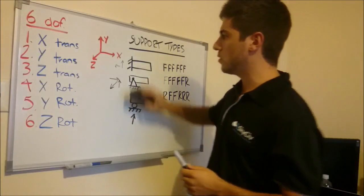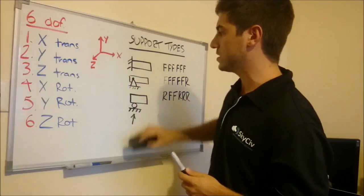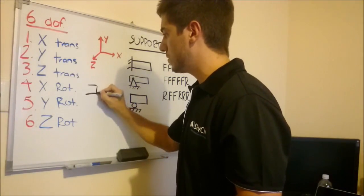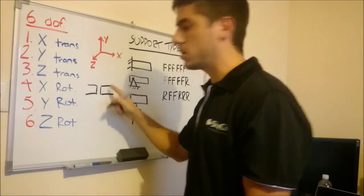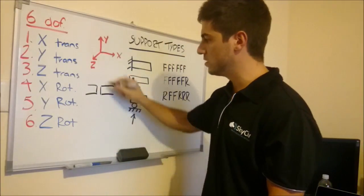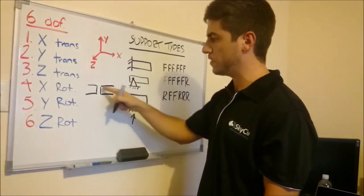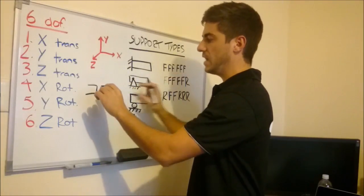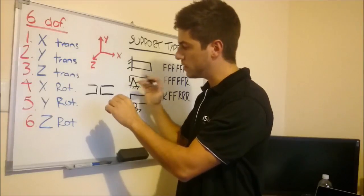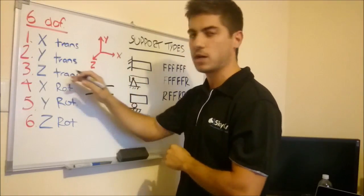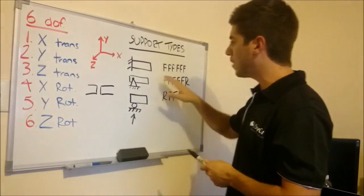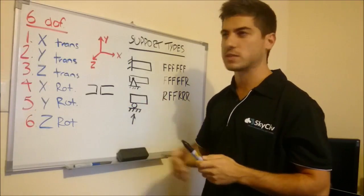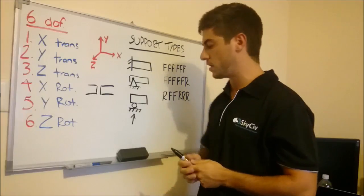Okay, so likewise, these also operate the same way as connectivity types. So if I have two members, and you want to give a code to how they're connected, a fixed support there, or a fixed connection, would just mean that any force or moment that is passed on from this member will be passed on through to the other member. So you can apply these same codes to member connectivity, and it's another application of these degrees of freedom.